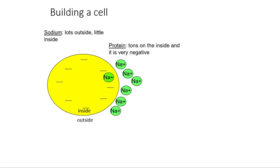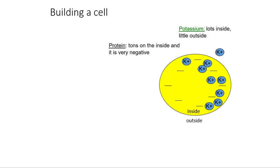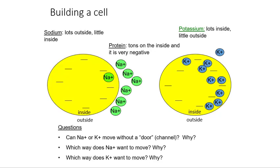Let's look at the setup for potassium. Where do we see potassium primarily concentrated — inside or outside the cell? We have lots of potassium on the inside and very little on the outside. Protein is still tons on the inside; that doesn't change. So if we put the two pictures together: a lot of sodium on the outside and a lot of potassium on the inside.